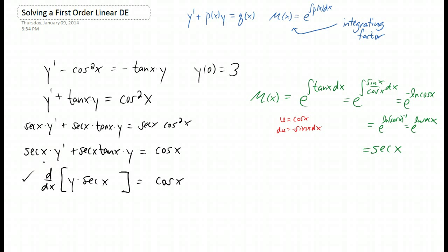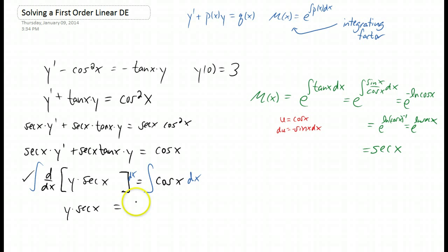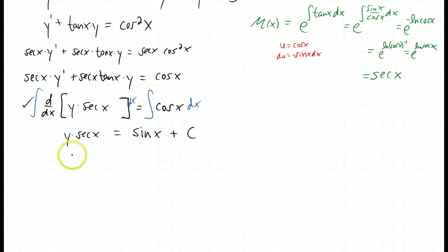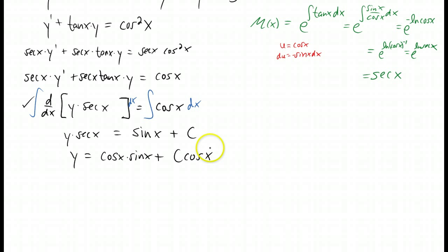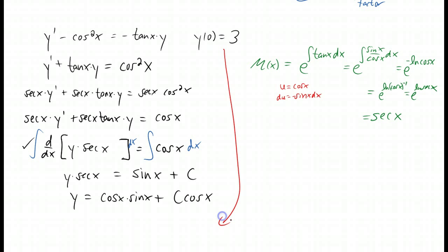The goal in solving any differential equation is to get y as a function of x. To get y by itself, we need to get rid of that derivative — we do that with an integral with respect to x. The derivative and integral cancel, and the integral of cosine of x is just sine of x plus a constant. Now, if we want to get y by itself, we divide through by secant, which is the same as multiplying through by cosine. We're going to use our initial condition to find c.